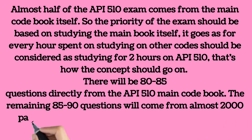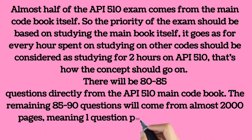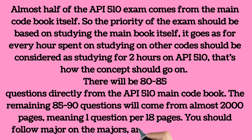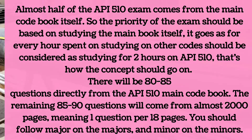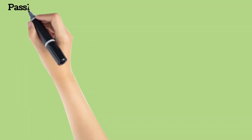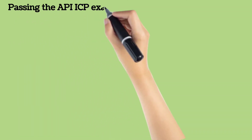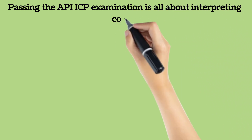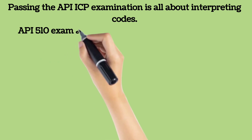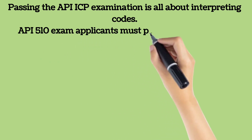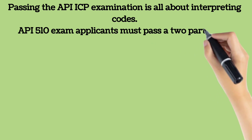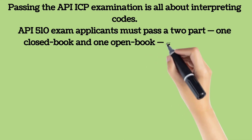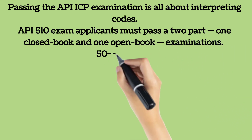You should follow the principle of major on the majors and minor on the minors. The level of course coverage directly depends on the average number of questions expected in the exam. Passing the API ICP examination is, unfortunately, all about interpreting codes. API-certified inspectors and personnel are recognized worldwide as professionals fully knowledgeable in industry inspection practices. API and ASME are separate organizations, so their codes are structured differently and written in quite different styles.